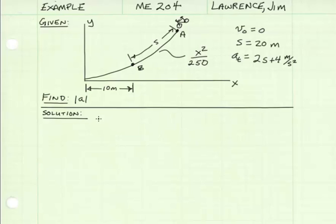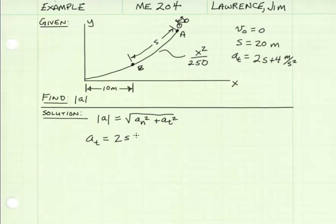To start, we're trying to find the magnitude of our acceleration, which is equal to the square root of our normal acceleration squared plus our tangential acceleration squared. So first we need to find our tangential acceleration and our normal acceleration. Our tangential acceleration is simply equal to 2 times s plus 4 meters per second squared. We know our position s is 20 meters, so we have 2 times 20 plus 4, which is equal to 44 meters per second squared.